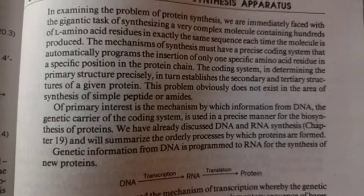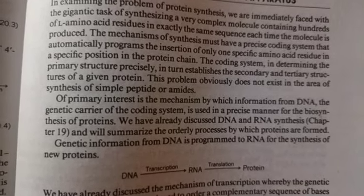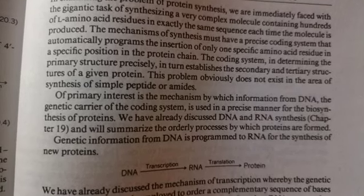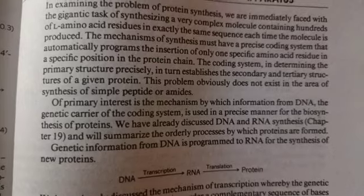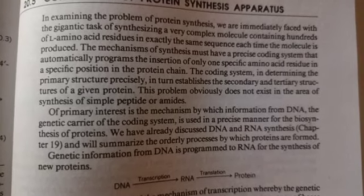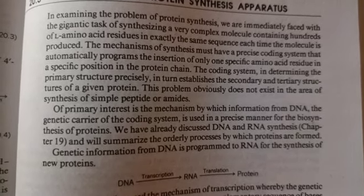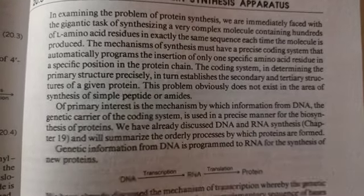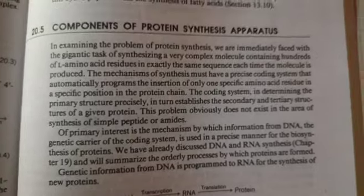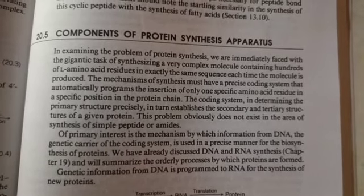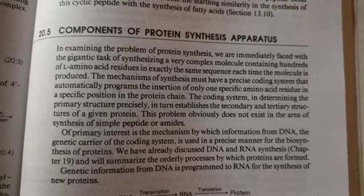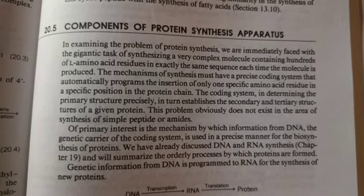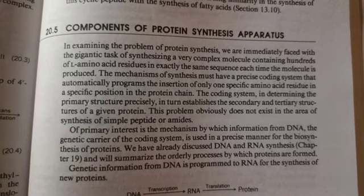Genetic information from DNA is programmed to RNA for the synthesis of new proteins. As we know, DNA is transformed into RNA by the process of transcription and from RNA to protein by the process of translation. DNA is employed to order a complementary sequence of bases in a new RNA chain.